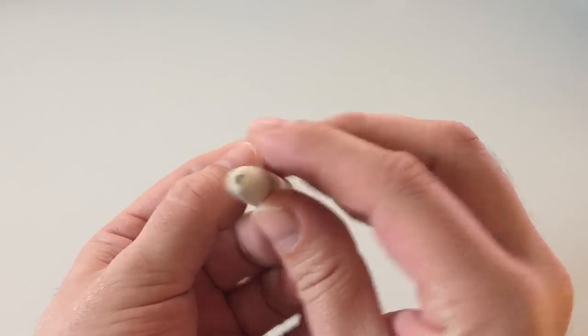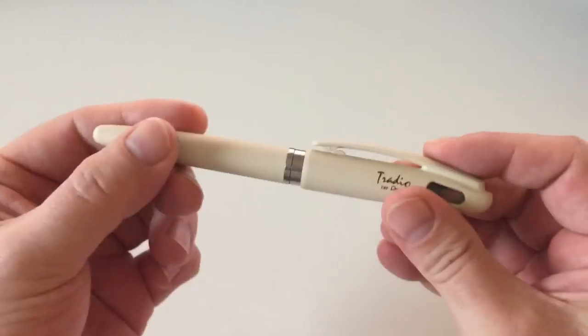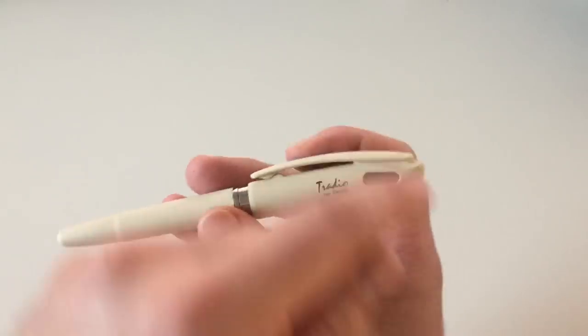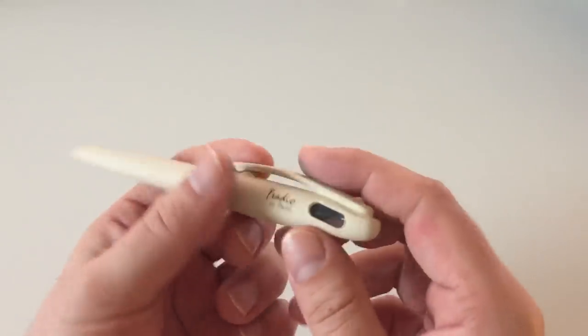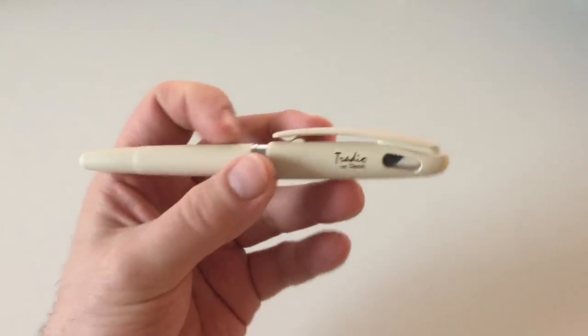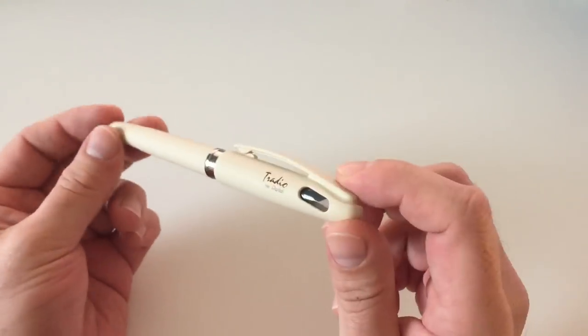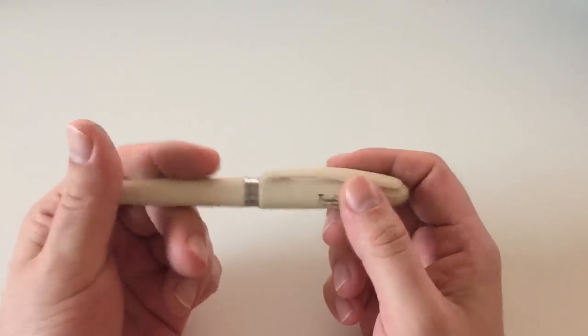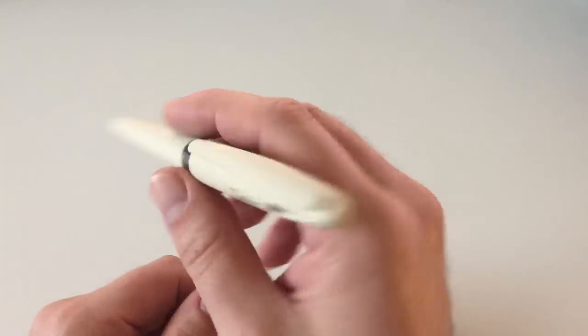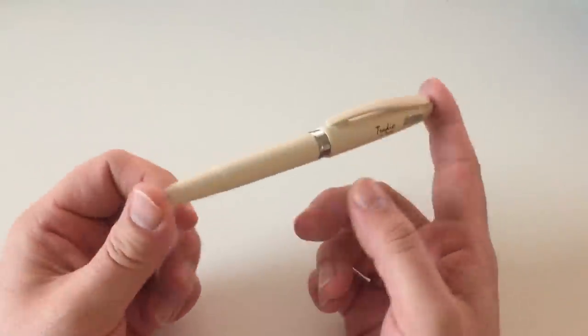There's also rollerballs available in that model or barrel body type of design, but this here is actually a fountain pen. The Pentel Tradio fountain pen comes in a couple of different colors. This here I think is called sand or stone, I'm not exactly sure.